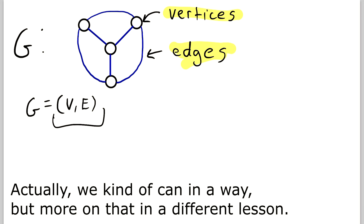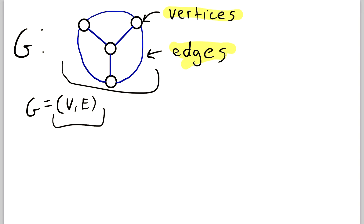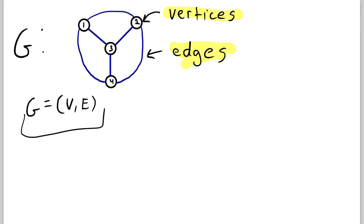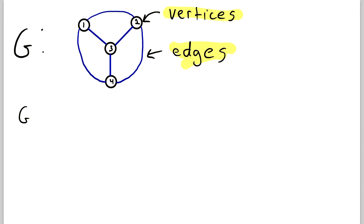Sometimes a visual representation is all we want to look at a graph's structure. But for the sake of this lesson, we're going to throw some labels down. We'll call this vertex one, this one two, this one three, and this one four. So G is an ordered pair — we open up the ordered pair and the vertex set comes first, containing vertices one, two, three, and four. Those are the four objects that go in the vertex set.